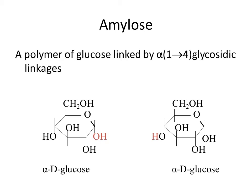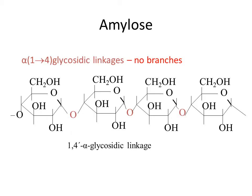Amylose has a specific type of linkage — all of its linkages are alpha 1,4, meaning you have two alpha glucoses joined by the one carbon on one glucose to the four carbon on the other. The hydroxyl group on carbon one is in the down position, making it alpha. If you look at a polymer of this, you can see it's all alpha 1,4 linkages one after another — a straight polymer chain of glucose with all hydroxyl groups down and no branches.